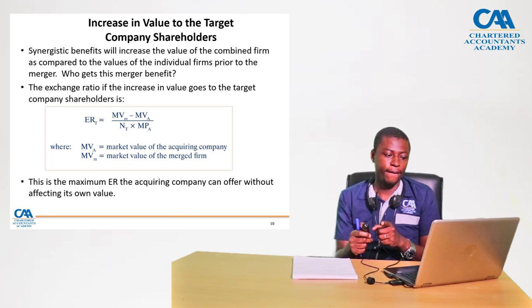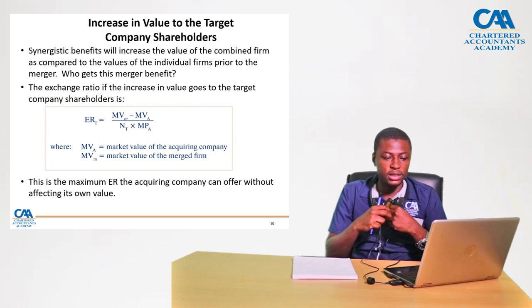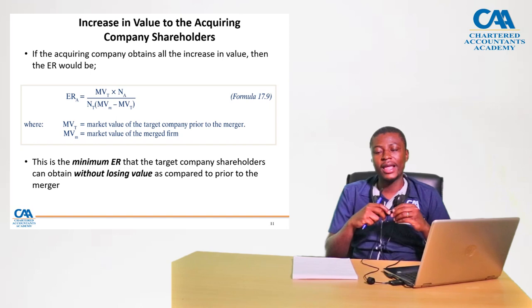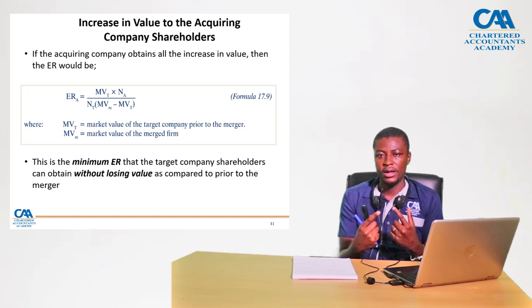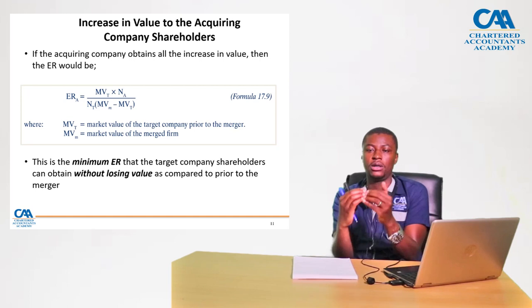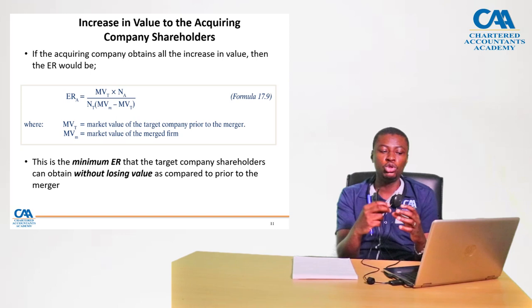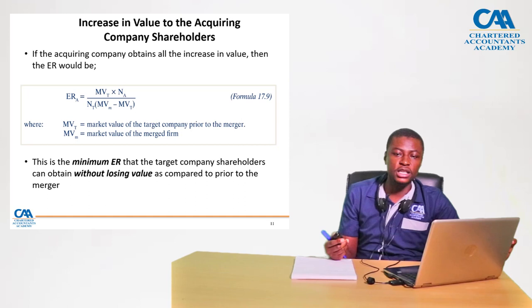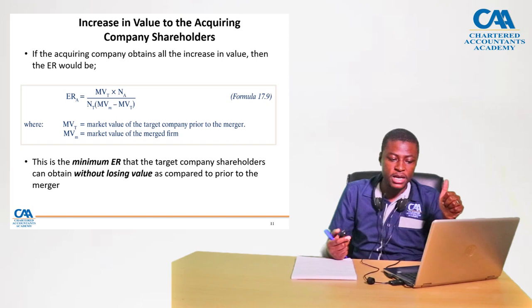On the flip side, if the acquiring company is the one obtaining all the increased value, the expected exchange ratio would be determined differently. Here we are saying: as a shareholder in the selling company, if we get this exchange ratio, I don't want to be worse off post-transaction. I don't want any erosion in value — pre-merger I should not be worse off than post-merger as a shareholder in the selling company. To ensure there is no loss in value to the selling shareholder, we apply this formula to determine the minimum exchange ratio that target company shareholders can obtain without losing value.